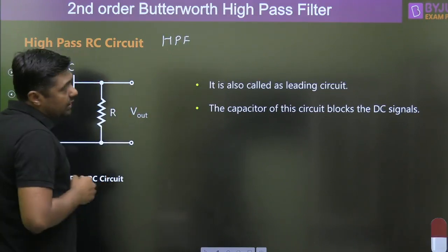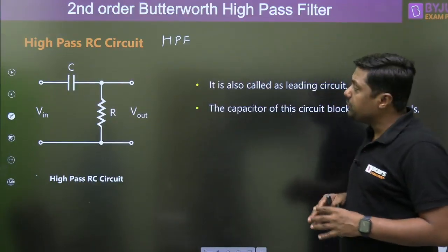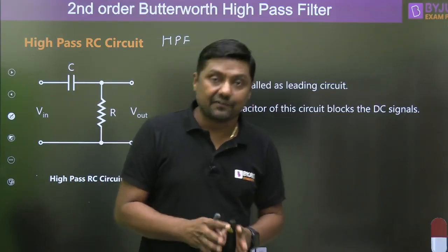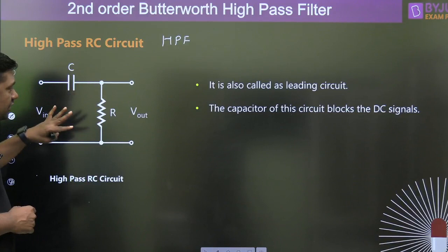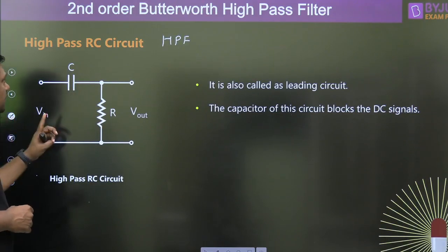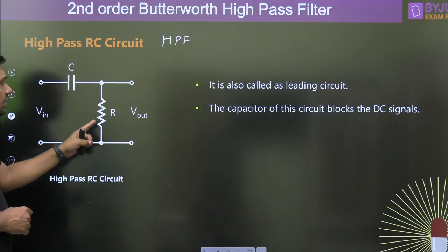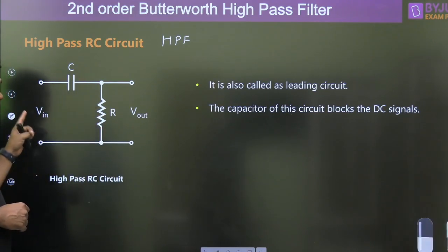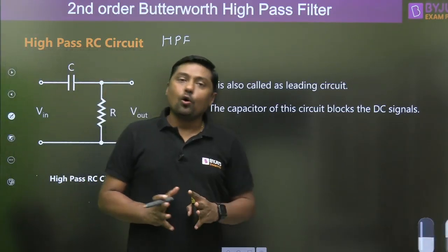It is also called a leading circuit. Why is it called a leading circuit? Because it will provide you a positive phase shift. It will provide a positive phase shift. If C is connected here and R is connected here, and we are taking the output across R while giving input at that point, then it is called a high pass filter.